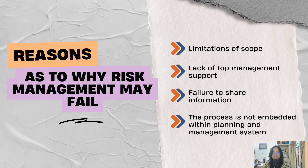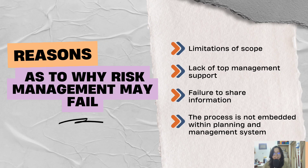These are some of the reasons why risk management may fail. Limitations of scope: if the company only limits their scope to a small area, they will not be able to pinpoint other risks present within other areas of the company. Lack of top management support: if top management does not support the risk management process, ignores it, or does not keep track of it, their careless actions will jeopardize the company, making it more vulnerable to other risks. Failure to share information: if everyone is not open to communication, people may not be aware of other risks present within the company. Lastly, the process is not embedded within planning and management systems — it is crucial to implement risk management at the start of every plan, as it helps companies foresee possible risks and prevent them.